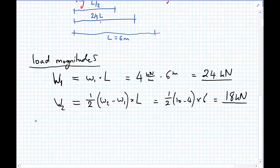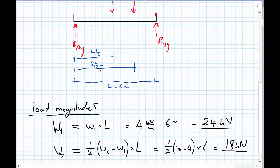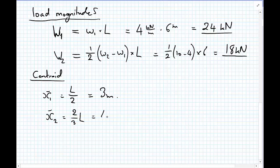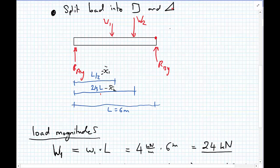So now we have the two loads. Let's just confirm the numbers for our centroidal distances. I'll call this X1 and this X2 with bars to show that they're centroids. So X1 equals L upon 2, which equals 3 metres. And X2 equals two thirds of L, which equals 4 metres. Now with this information, we can set up our equilibrium equations and calculate what the reactions RAY and RBY need to be for this beam to be in equilibrium.